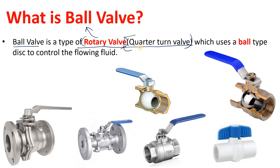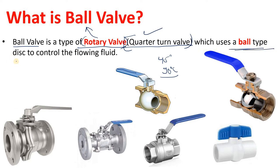What does quarter-turn mean? It means there is a handle and you have to provide a quarter motion — you have to turn it quarterly. It may be 45 degrees, it may be 90 degrees if you want to close it. So you will have to provide a 90-degree turn. This type of valve is a quarter-turn valve, which uses a ball-type disc.